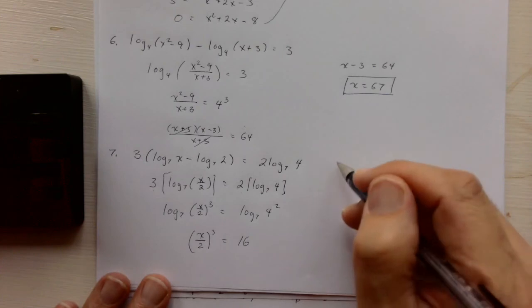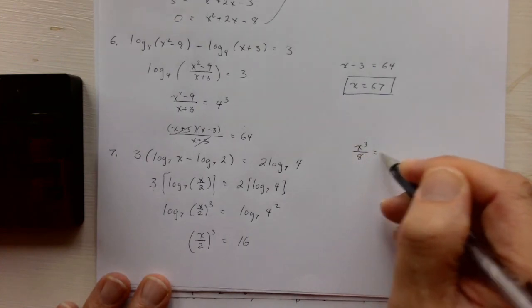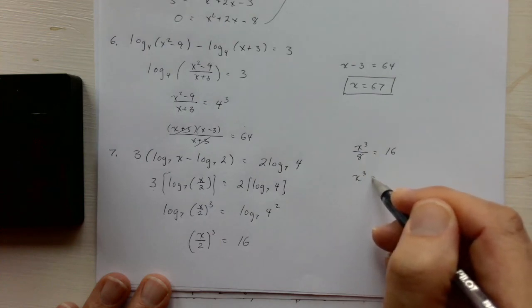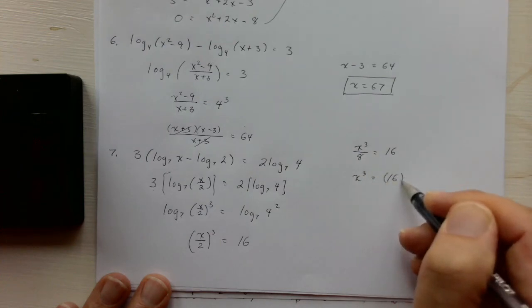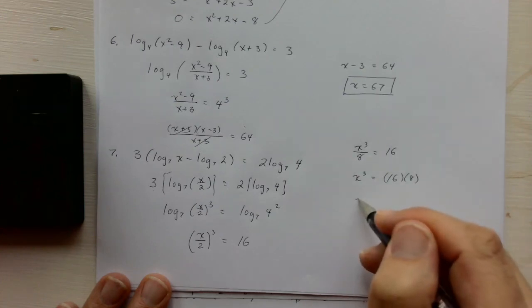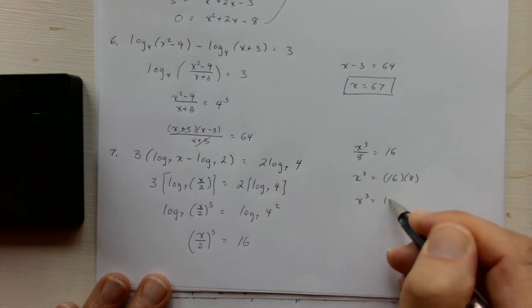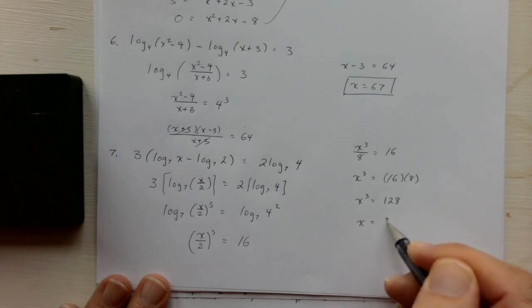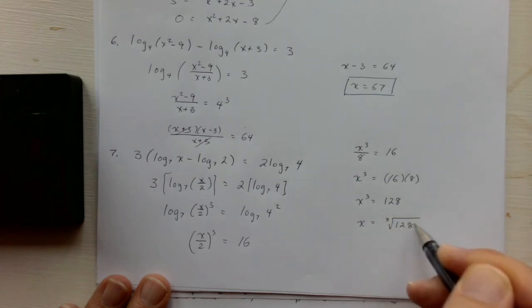And this means that x cubed over 8 is 16. x cubed is 16 times 8, which I believe is 128. Okay, and we can take the cube root of both sides. So x will be the cube root of 128, I think.